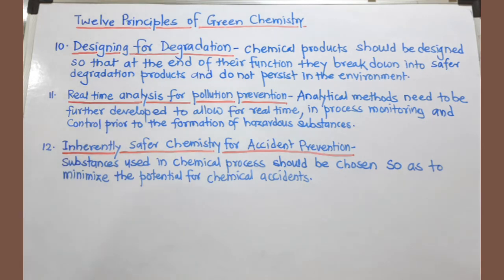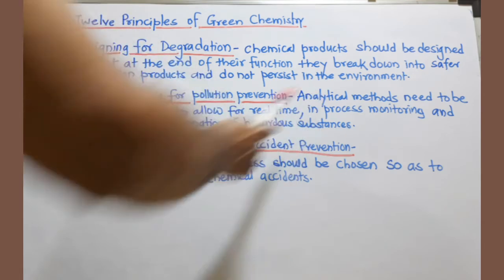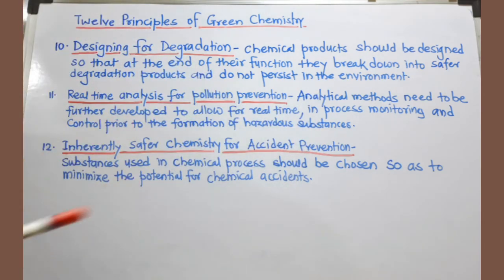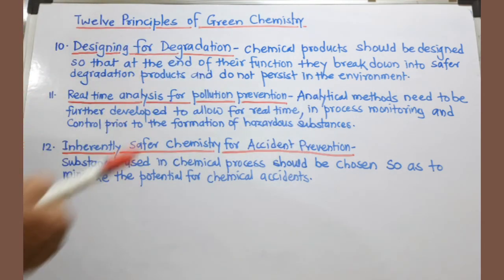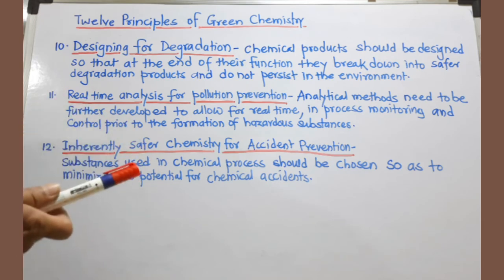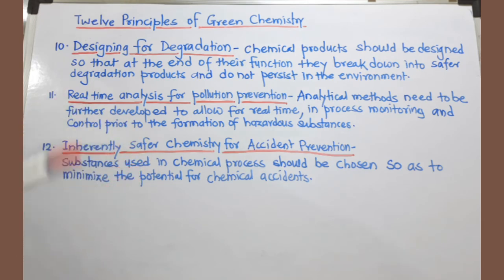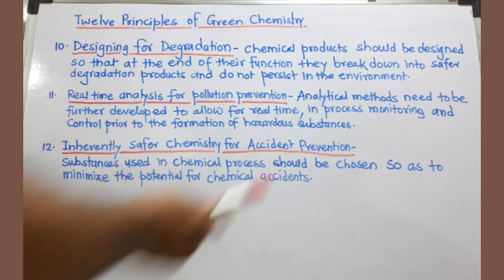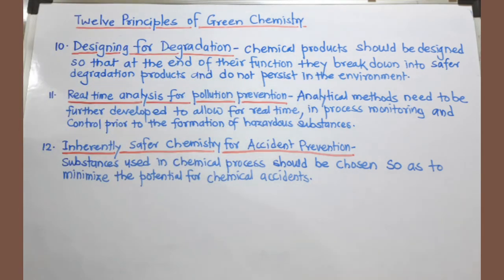The eleventh principle is real-time analysis for pollution prevention. We must develop analytical techniques that monitor and control chemical processes prior to the formation of hazardous substances, so chemical accidents can be avoided. This kind of advancement in analytical chemistry is essential.